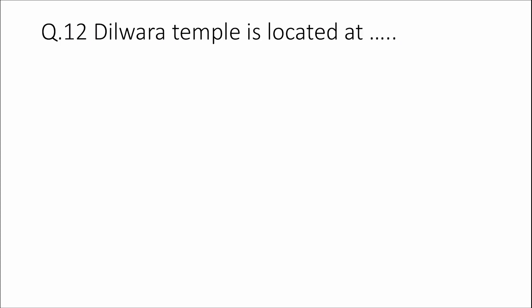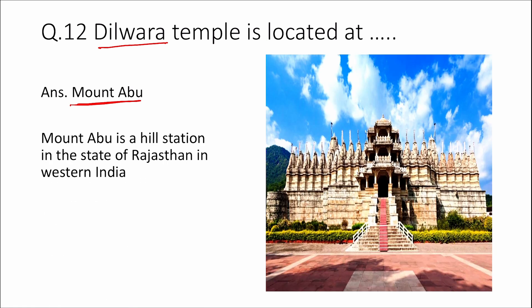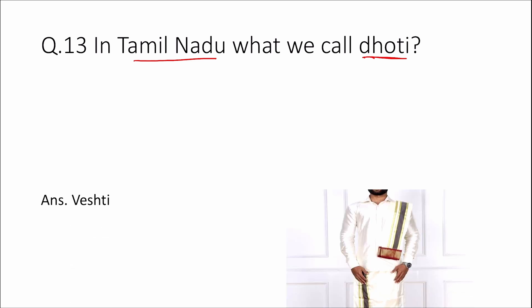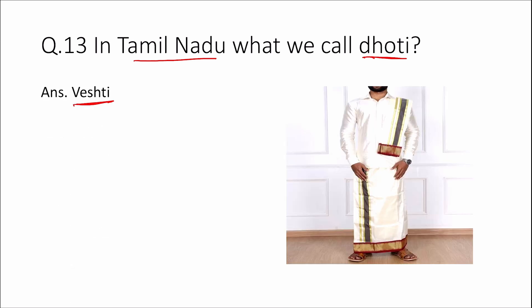Question 12: Dilwara Temple is located at? Answer: Mount Abu. Mount Abu is a hill station in the state of Rajasthan in western India. Question 13: In Tamil Nadu, what do we call dhoti? Answer: Veshti.